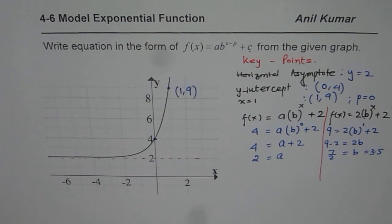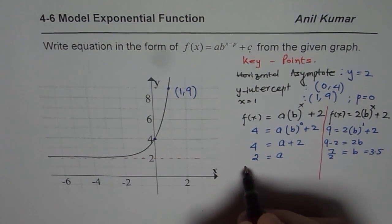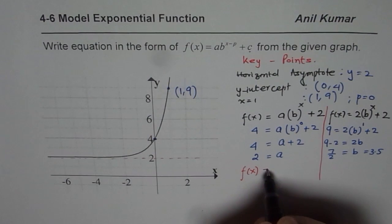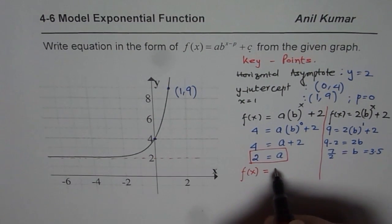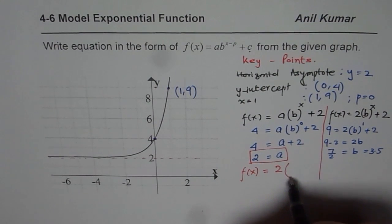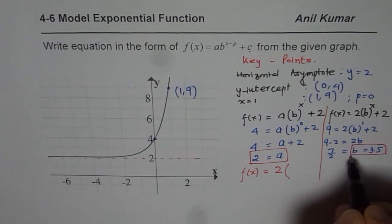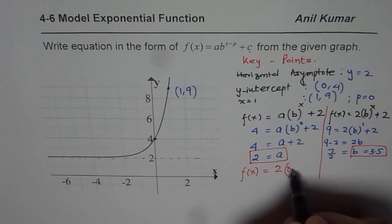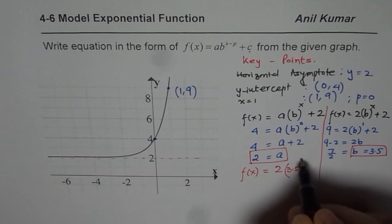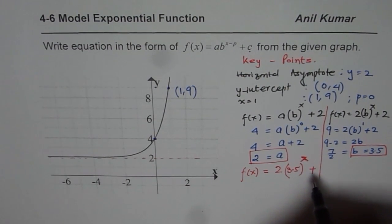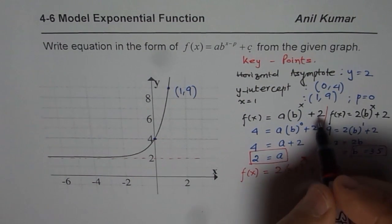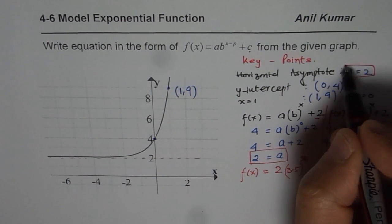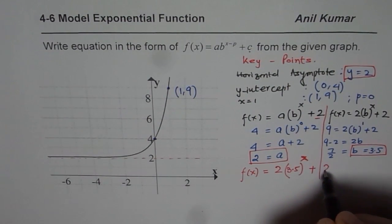Now we can write down our function. We say f(x) = a is 2, b is 3.5 or you could write 7/2 to the power of x, plus c which is y = 2 we found, and we wrote c as 2 here, which is the value of c = 2. So we get our equation.